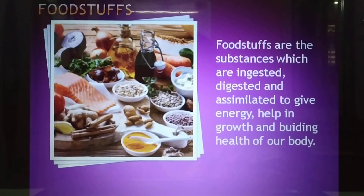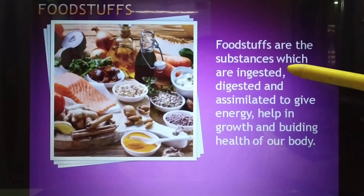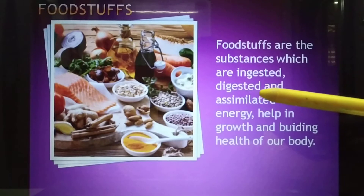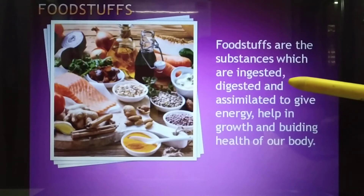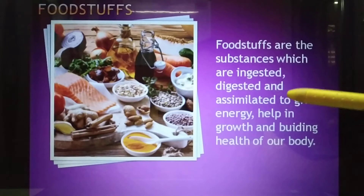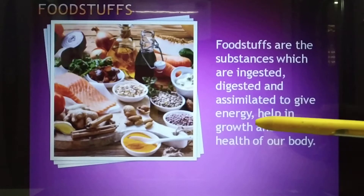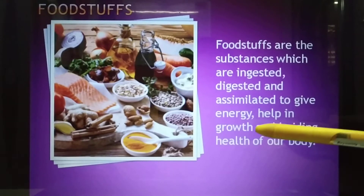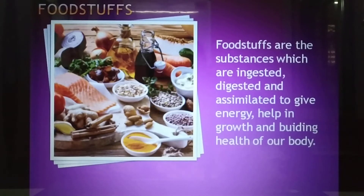When we eat foodstuffs, we first ingest them — meaning we take them inside our body. Then the stomach digests whatever we have had. Whatever nutrients are obtained from those foodstuffs will be assimilated — meaning collected and put into your bloodstream — so that it provides you with energy and also helps in growing and building the health of our body.